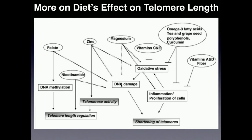Zinc activates telomerase activity, which helps prevent telomeres from shortening too much. Magnesium slows DNA damage because DNA requires magnesium to function, and magnesium is also a cofactor for DNA polymerase and RNA polymerase — zinc is a cofactor for RNA polymerase as well. The main idea is that many dietary factors play a role in either promoting telomerase activity or regulating telomere length, preventing shortening. Without adequate amounts — particularly antioxidants — you'll have more chronic systemic inflammation, DNA damage, and oxidative stress, all of which shorten telomeres.